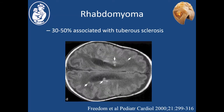Cardiac rhabdomyomas are associated with tuberous sclerosis in probably at least 30 to 50 percent, maybe even more than 50 percent, of cases. This can be apparent on MRI of the brain, where you can see tubers around the ventricular system. The neurologic consequences of tuberous sclerosis can be quite important, with epilepsy and dementia being some of the problems that can be seen.